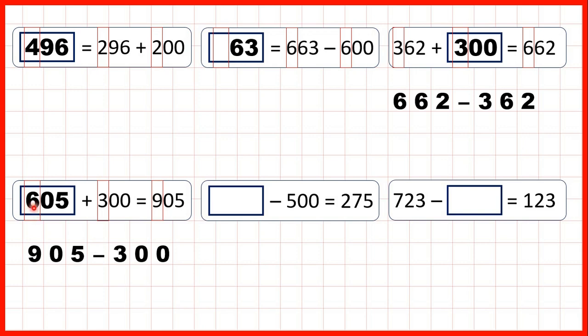And that makes sense, because 6 plus 3 is 9, but then because we have 5 ones in our answer, and we weren't adding any ones, we must have 5 ones in the number that we start with.